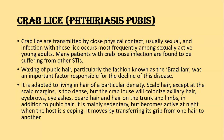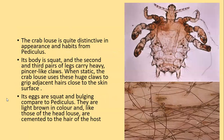Crab lice are mainly sedentary but become active at night when the host is sleeping, moving by transferring their grip from one hair to another. The crab louse is quite distinctive in appearance from Pediculus humanus — the body is squat, and the second and third pair of legs carry heavy, pincer-like claws. When static, the crab louse uses these huge claws to grip adjacent hair close to the skin surface. The eggs are squarish and bulging compared to Pediculus, light brown in color, and like head louse eggs, cemented to the hair shaft.